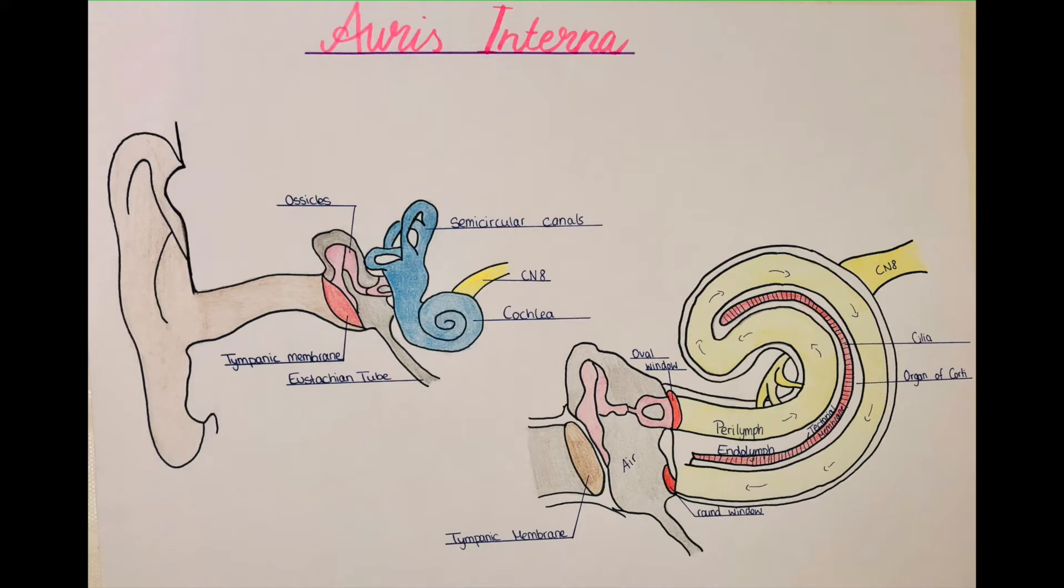Just as a short recap we have the external acoustic meatus which transfers the sound waves to the tympanic membrane which then moves the ossicles. So we have a conversion from sound waves to pressure patterns which are given further by the malleus, incus and stapes, the three ossicles to the inner ear. Here the cochlea is responsible for transferring these pressure patterns into action potentials. How this is going to happen I will explain later.